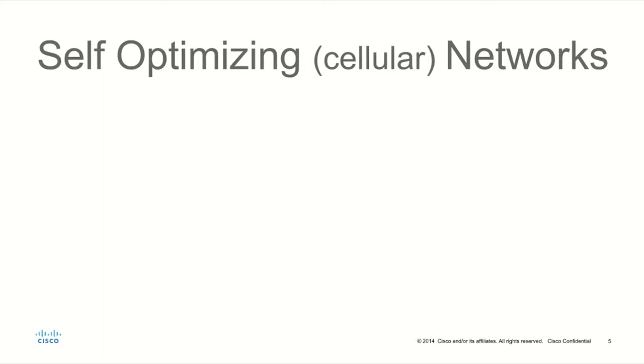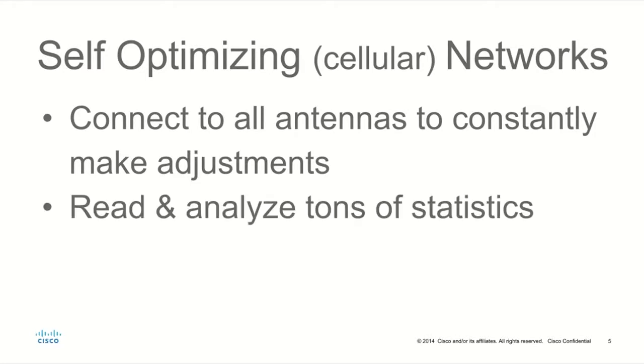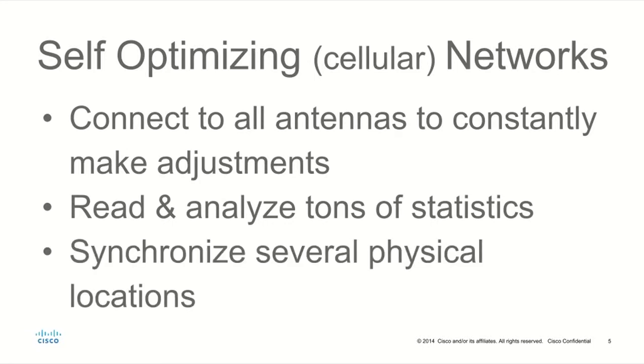We're building self-optimizing cellular networks, or SON systems, as they're called in the industry. The idea is to take a statically configured cellular network and turn it into a kind of a living, breathing network that constantly changes and adjusts itself according to the users and their traffic patterns. We have a few challenges. The first is how do you connect to all those antennas in the network simultaneously to constantly make those adjustments? The second is how do you read and analyze all the tons of statistics from the network to make intelligent changes?